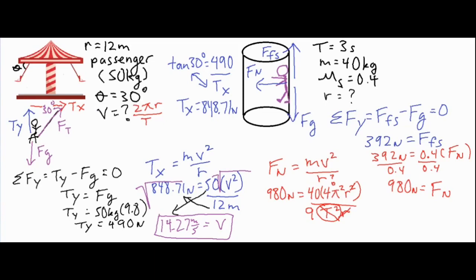Doing the cross multiplication: numerator is 980 × 9, and the denominator is 40 × 4 × π². Solving that gives a radius of 4.47 meters.